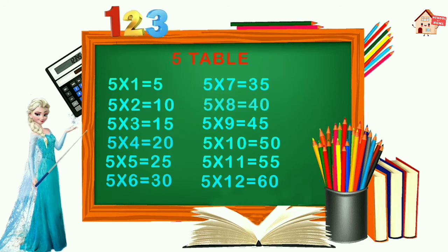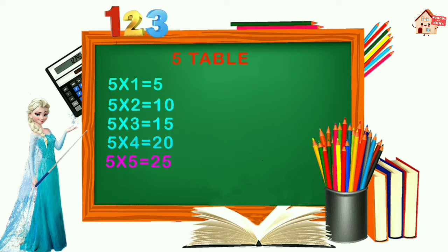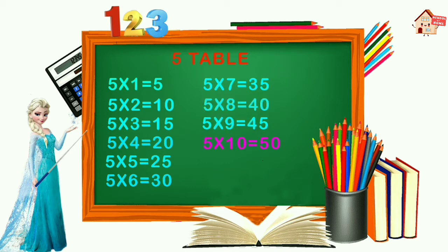Let's sing table of 5. 5 ones are 5, 5 twos are 10, 5 threes are 15, 5 fours are 20, 5 fives are 25, 5 sixes are 30, 5 sevens are 35, 5 eights are 40, 5 nines are 45, 5 tens are 50, 5 elevens are 55, 5 twelves are 60.